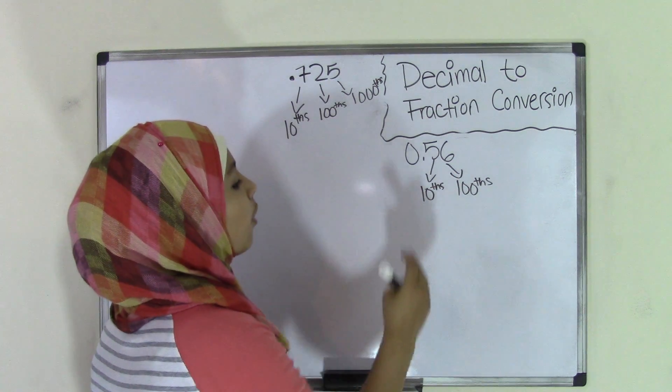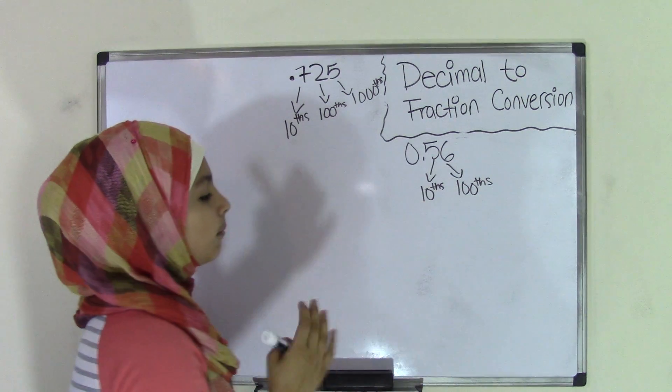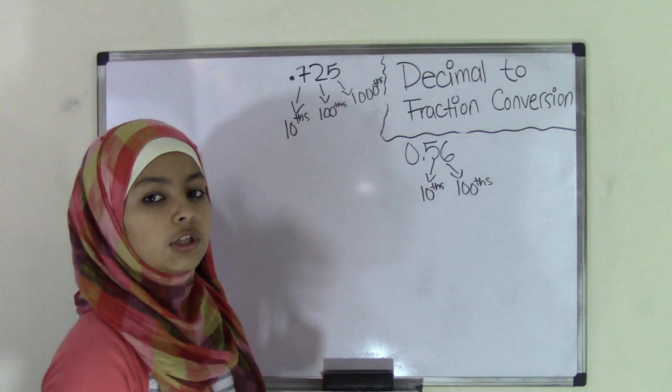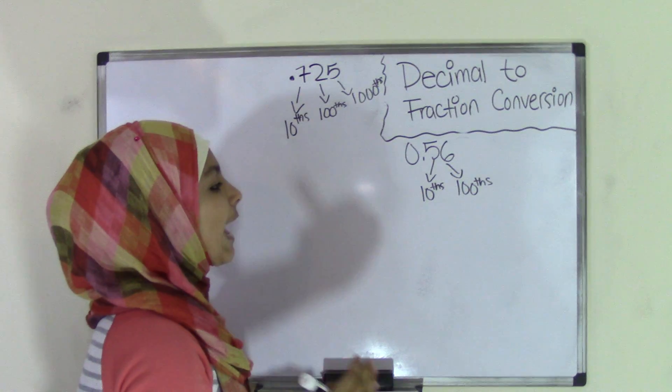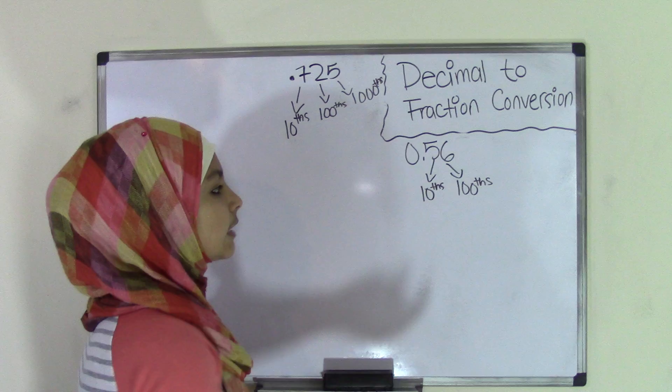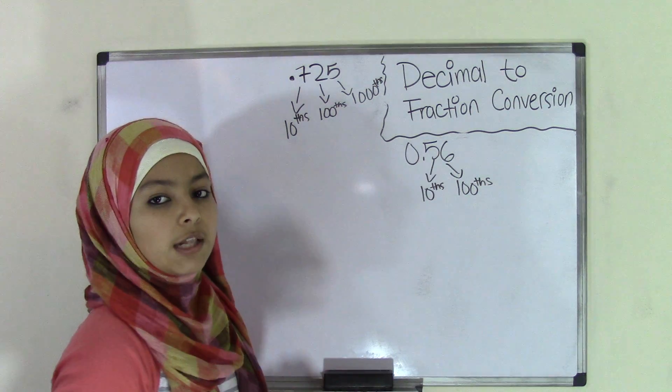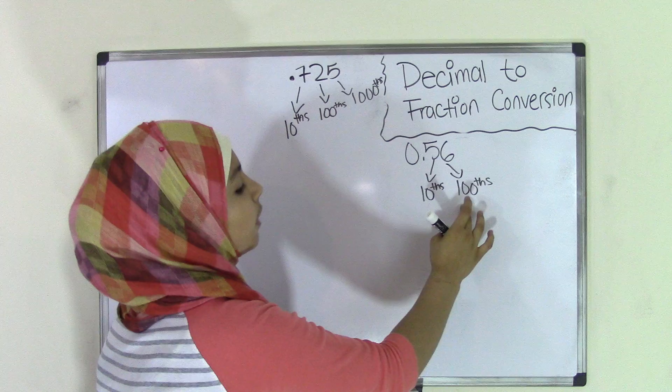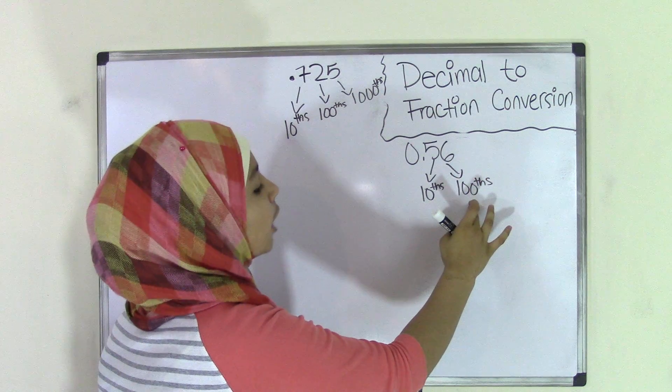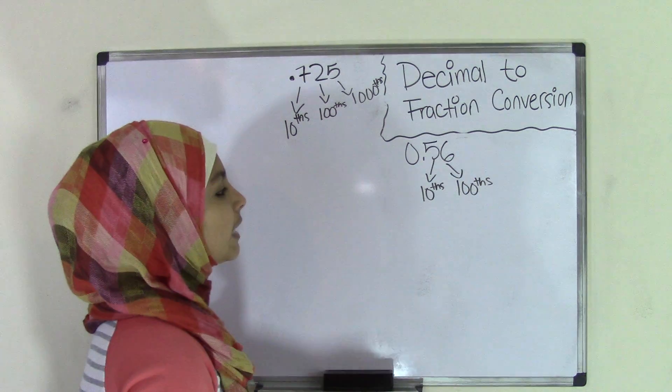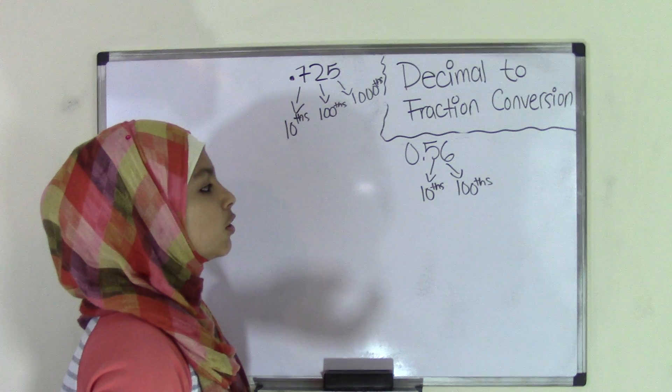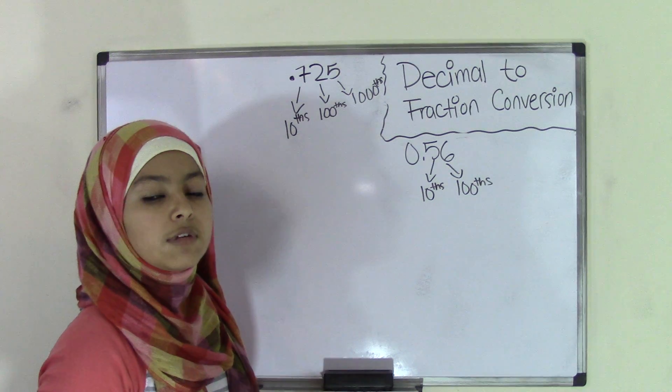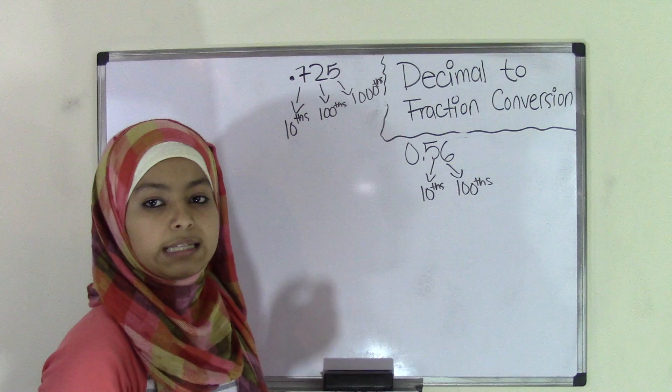That means now that we have our place values labeled. Now what you need to do is that you need to focus on the last digit in the decimal number, which in this case is 6. Now you need to see what place value is the 6 in. Now we already know that 6 is in the hundredths place value. That means 0.56 can also be pronounced as 56 hundredths.